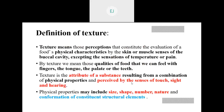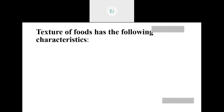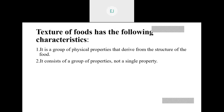That is the texture factors. In case of texture factors, there are some characteristics. It is a group of physical properties that derive from the structure of the food. For example, an apple is firm like an apple, or soft like a tomato. If it is soft like a tomato, that texture is not good. If it is firm like an apple, that texture is good. It is always a group of properties rather than a single one.